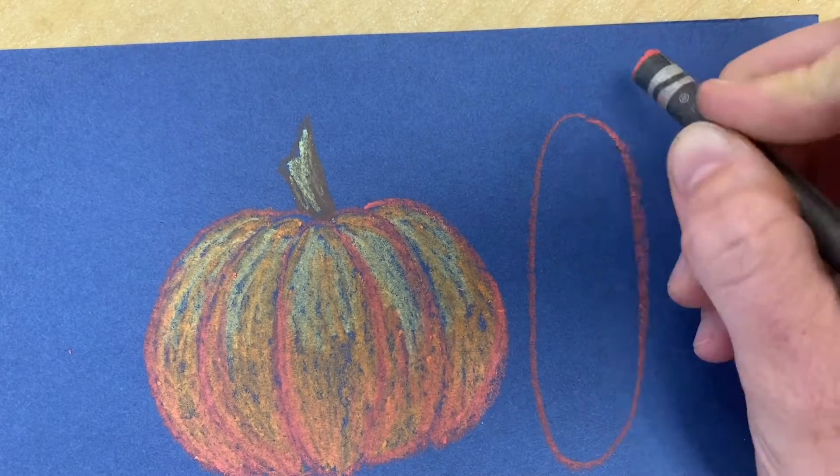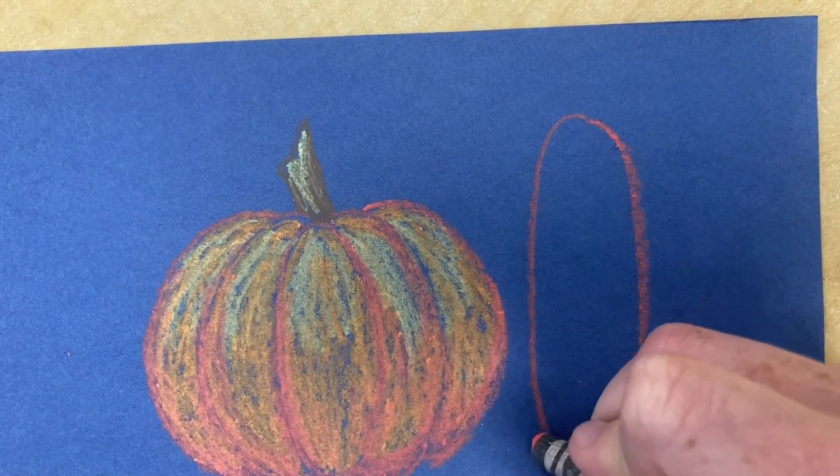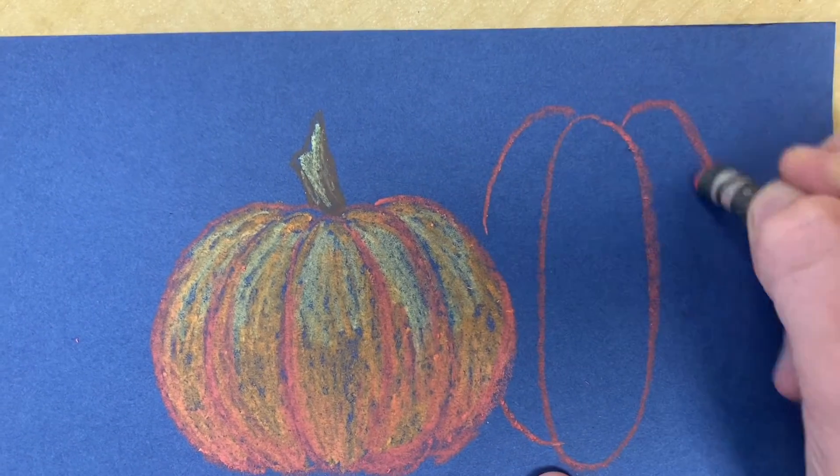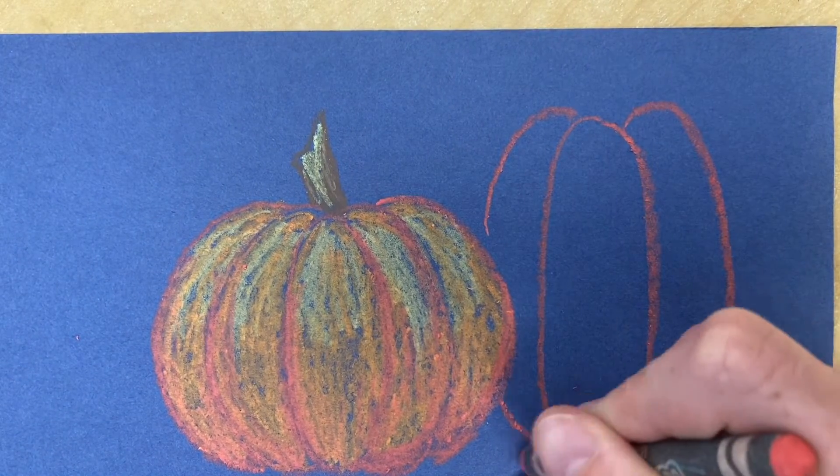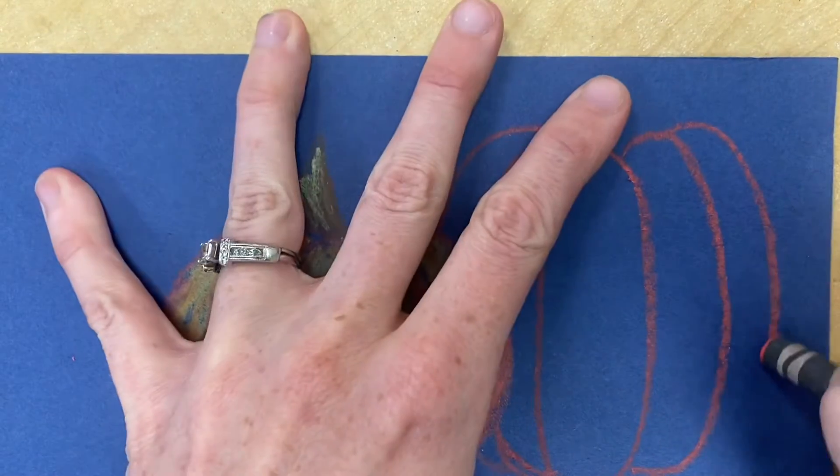Now if you want to, you can move to the side and draw another pumpkin that goes behind the first one you drew. Repeat the steps but make it look like it goes behind your first pumpkin. Make sure your lines don't go through it—stop when you hit the edge.